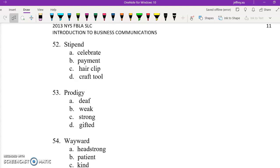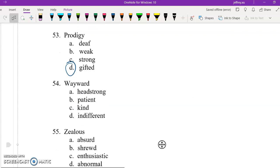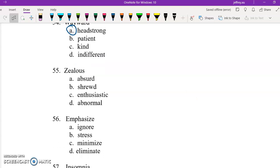Stipend is basically a small payment of money that you receive for completing some sort of task. So if you've ever taken on an internship, for example, or like some sort of small research position, you might have been paid like a certain sum of money for your contributions to the work you did there. So B is your correct answer. 53, if you're a prodigy, it means that you're really gifted in some special area. So D is your correct answer. 54, wayward means headstrong or stubborn. 55, zealous means that you're really enthusiastic or excited about something. So C is your correct answer.